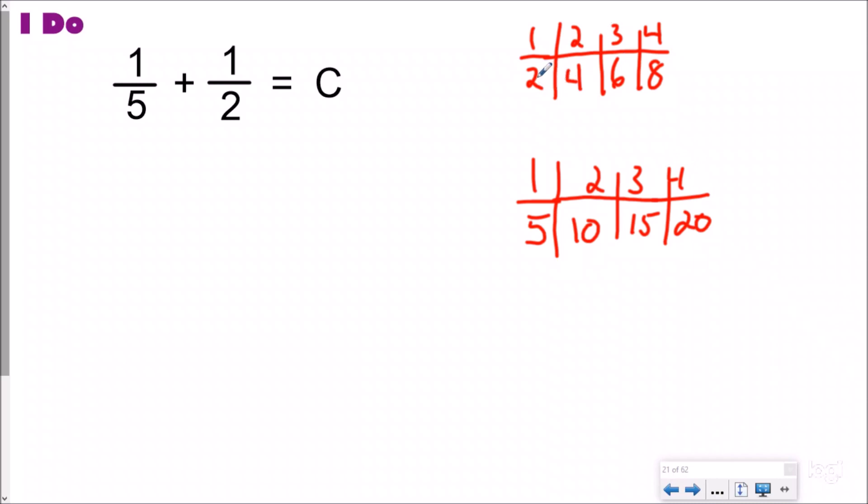Now I do not see any common denominators yet. So what I'm going to do is I'm going to continue my pattern method for the smaller denominator of two, and I'm gonna do one more, and eight plus two, oh,